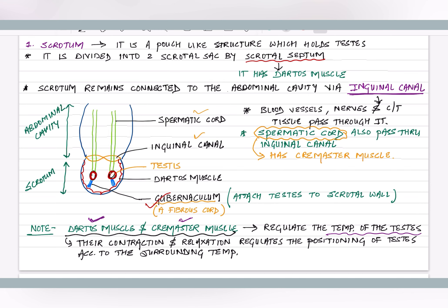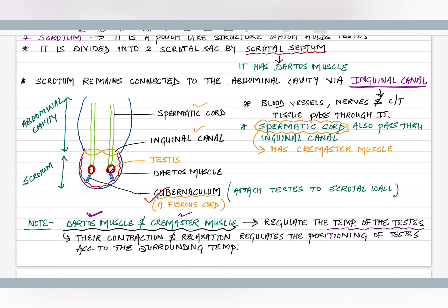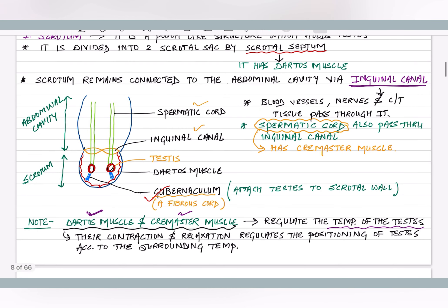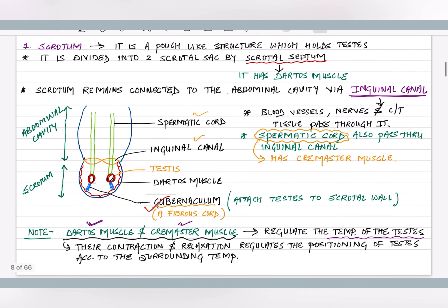In the diagram, this part is the testis, and the testis is connected to the scrotal wall via a structure called the gubernaculum. The gubernaculum is a fibrous cord-like structure that attaches the testis to the scrotal wall.